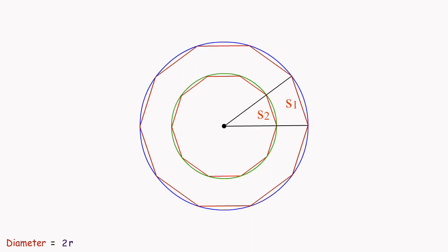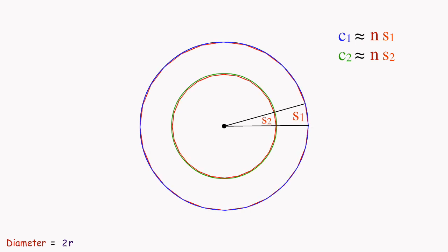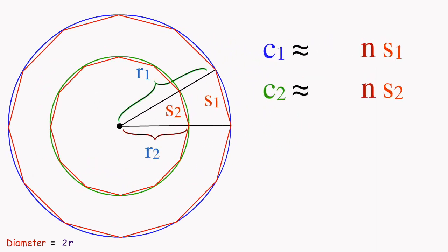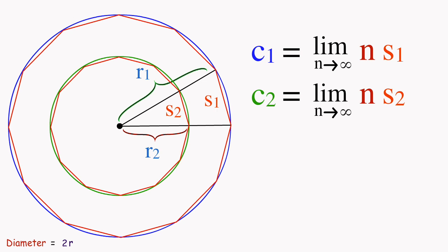Therefore, as the number of sides of the polygons increase, their perimeters approximate the circumferences of the circles. Eventually, as the number of sides increase to infinity, we can say with certainty that the perimeters of the polygons become equal to the circumferences of the circles.